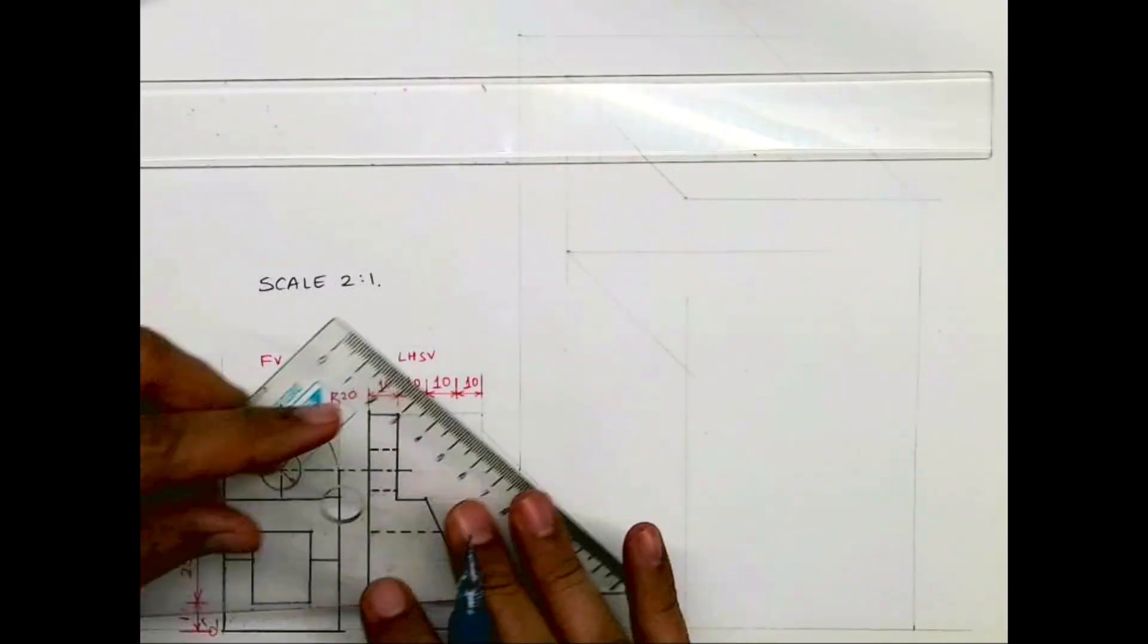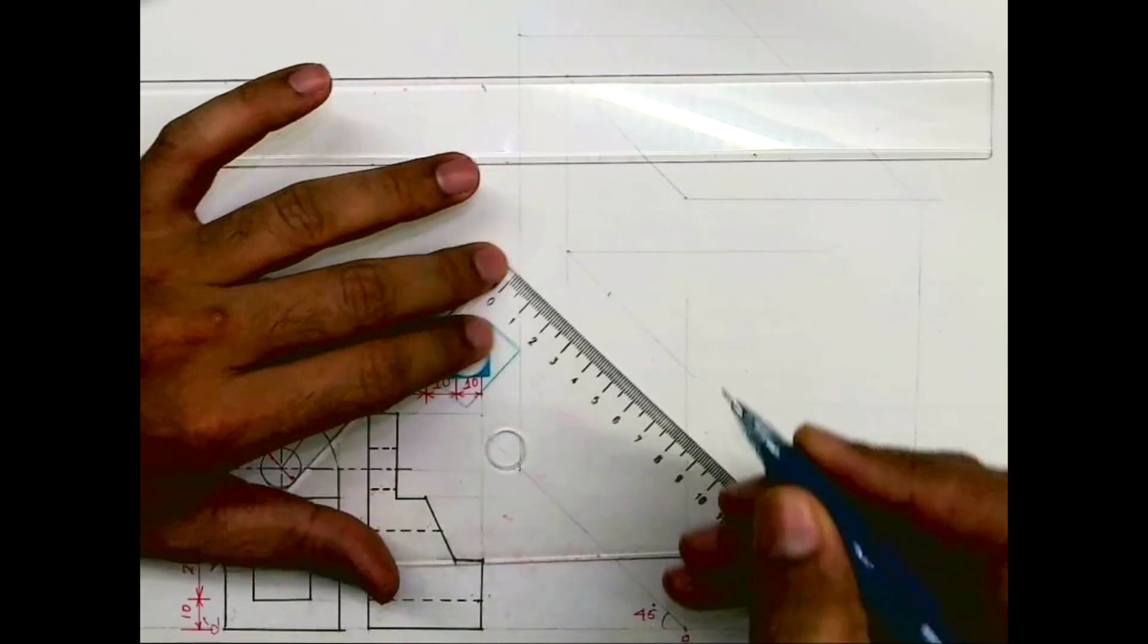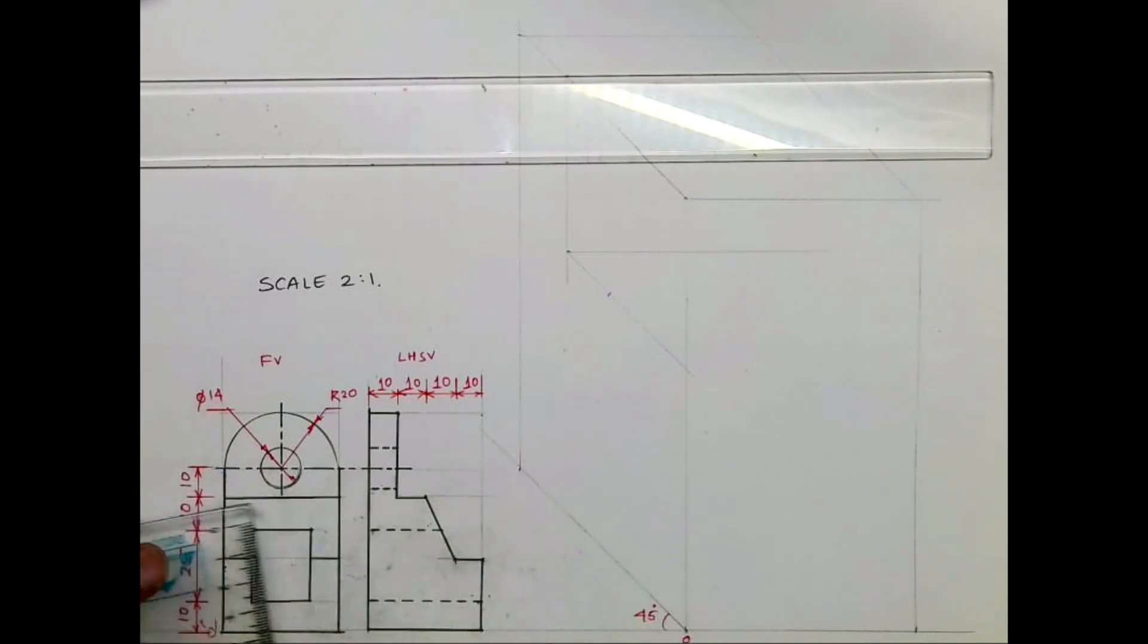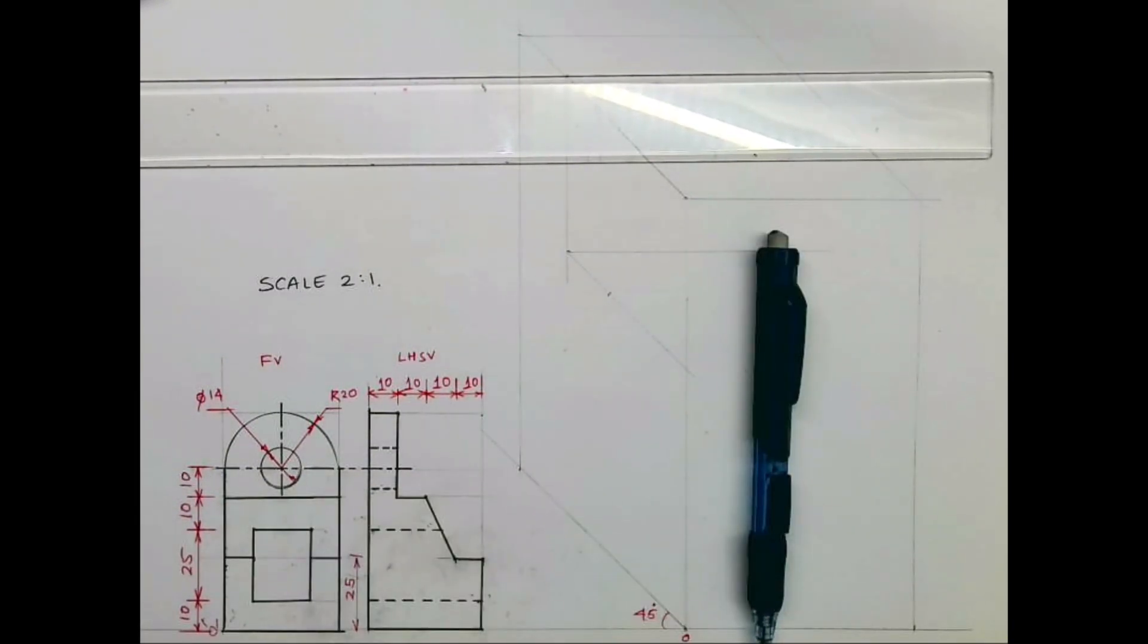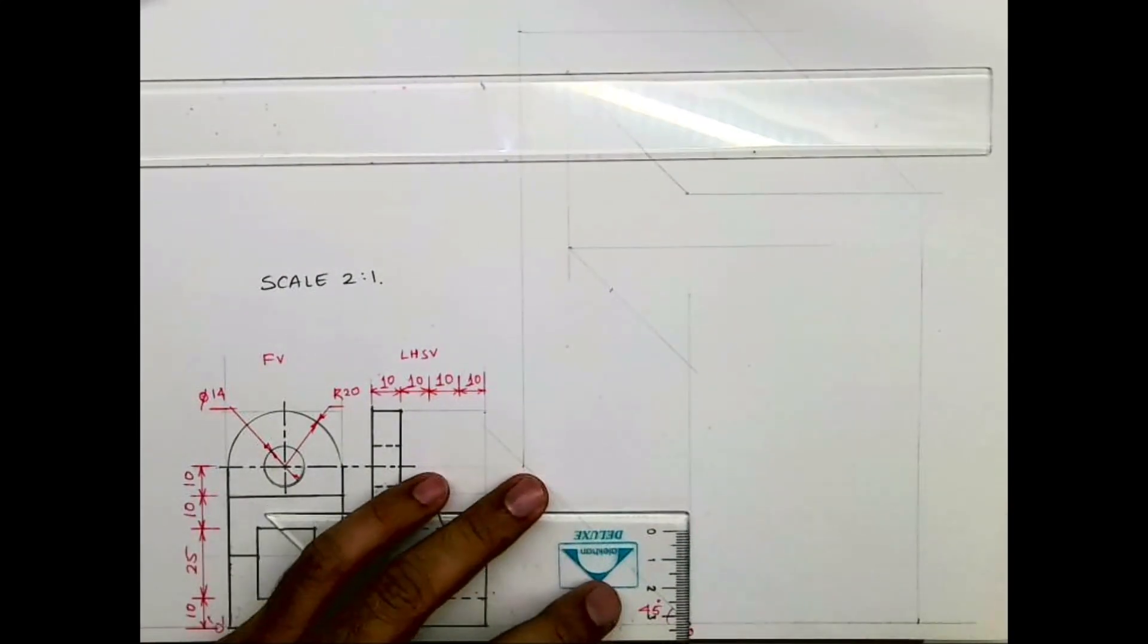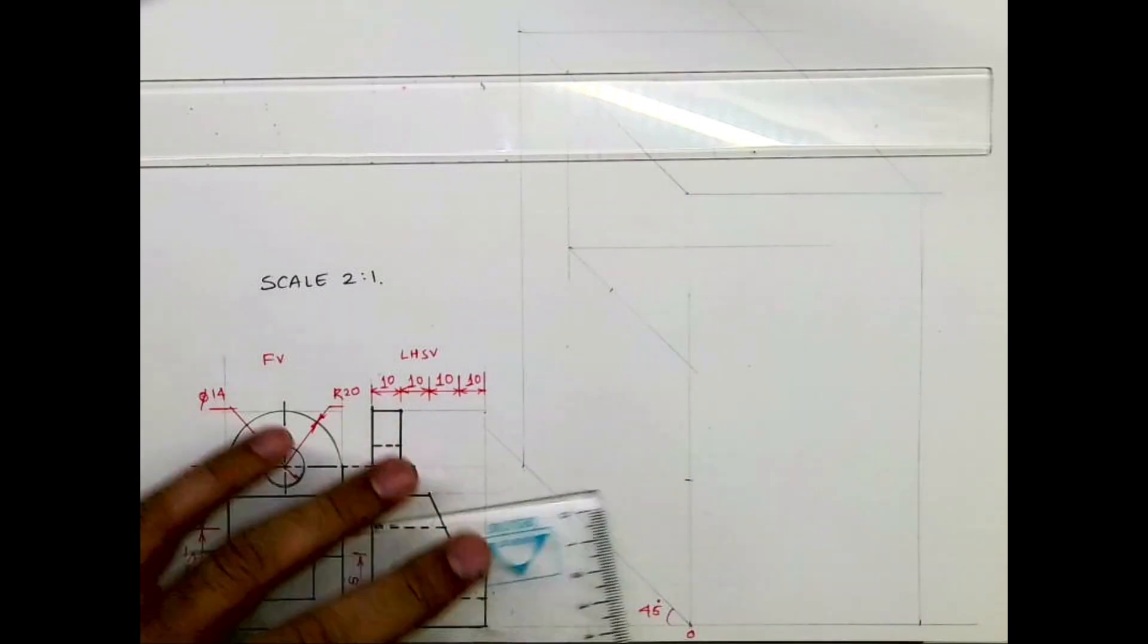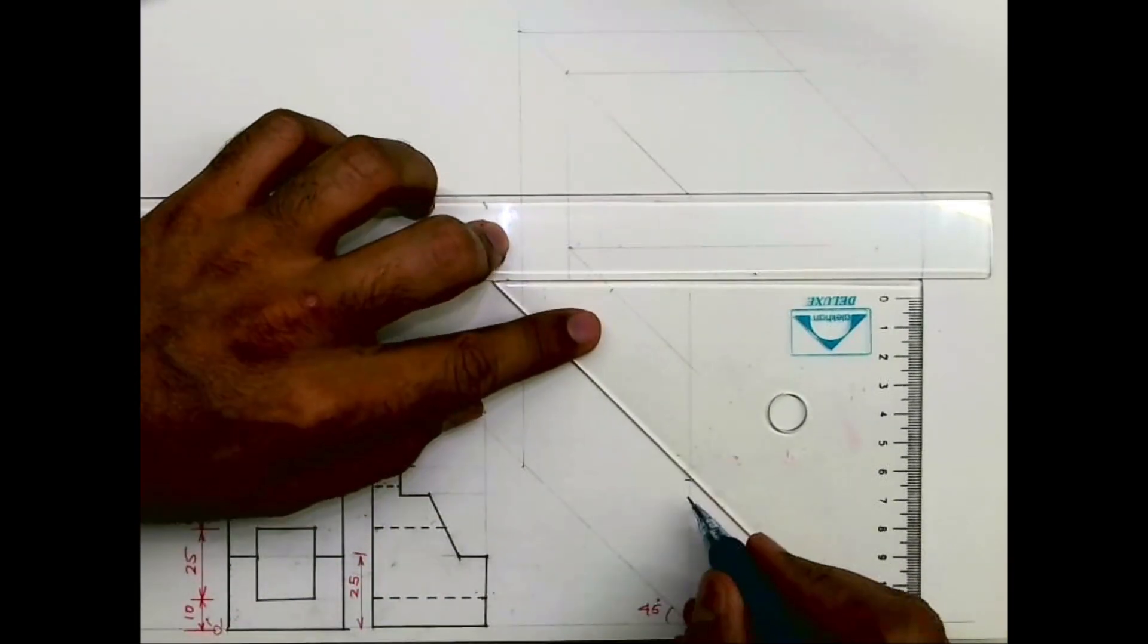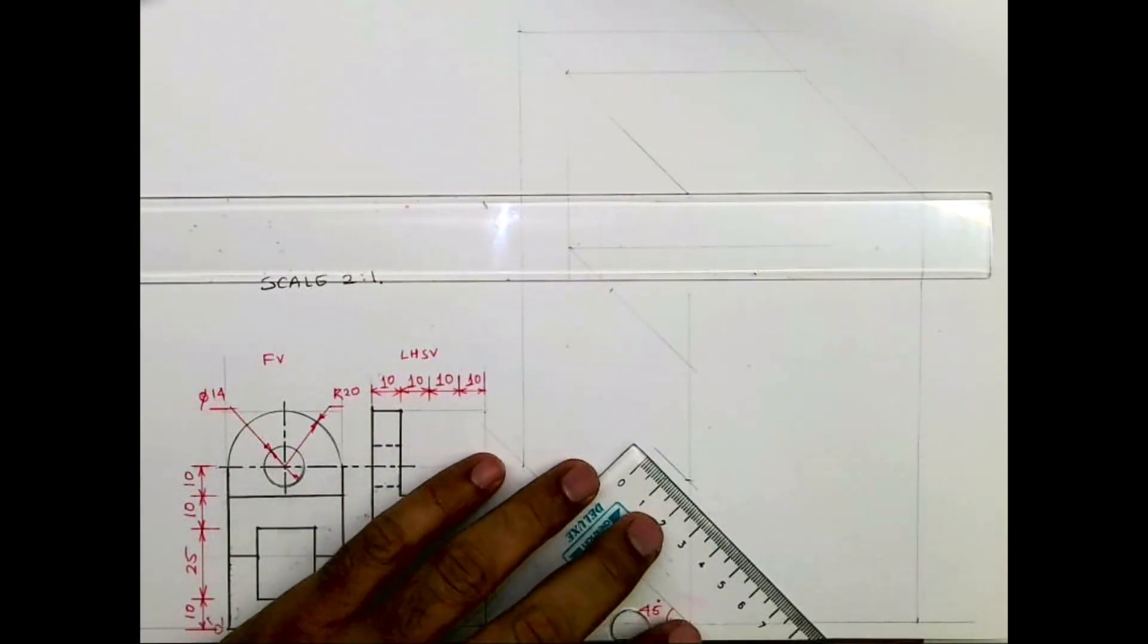From here I will take again 20. This height is 25mm, so I'll go up by 50. I'll draw a line like this which is 20.